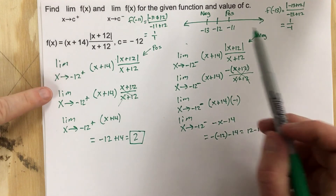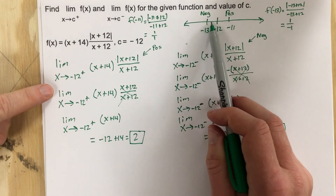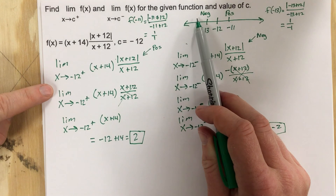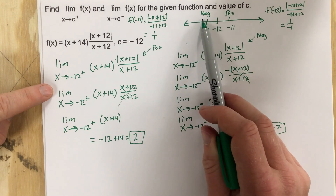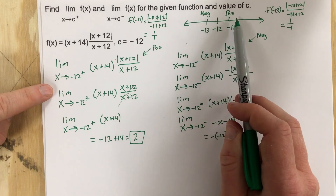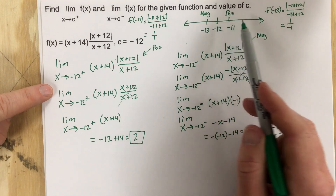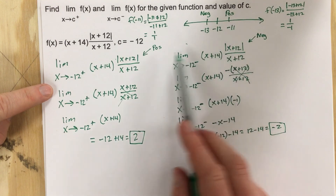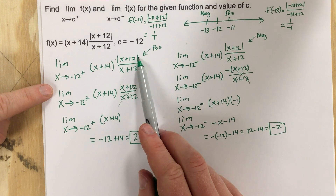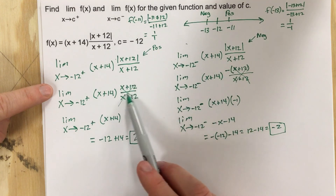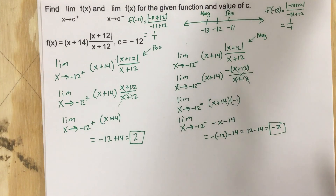We found these results by looking at values to the left and right of negative 12 — approaching from the left side and from the right side — and using those small calculations to break the absolute value down into two different pieces.